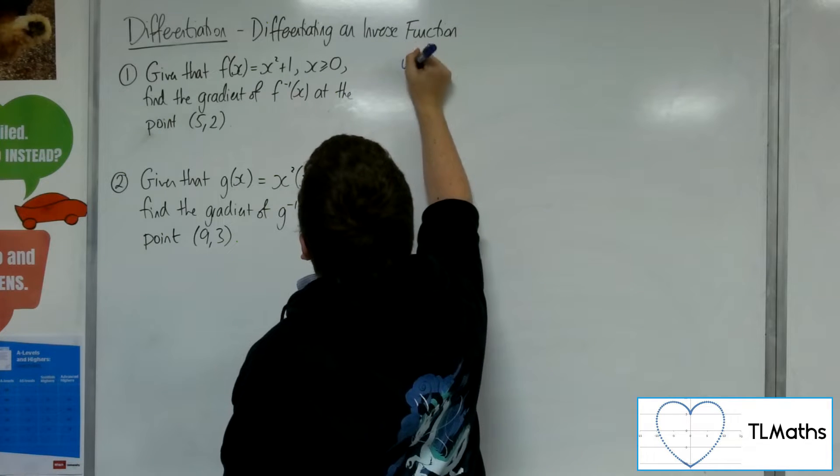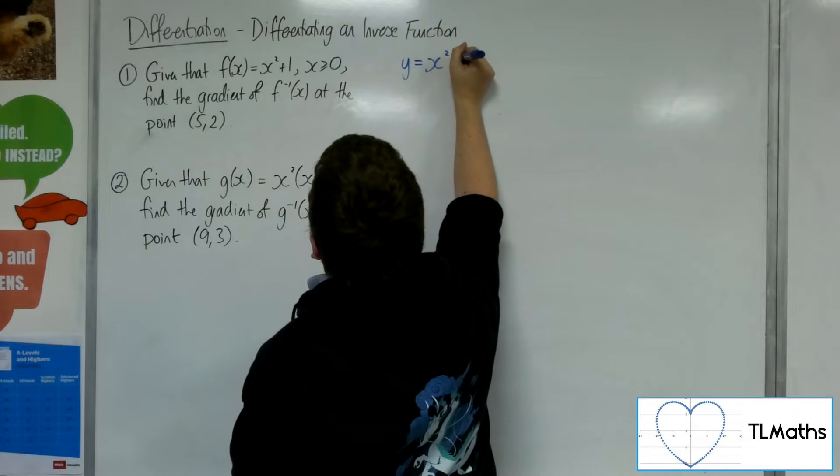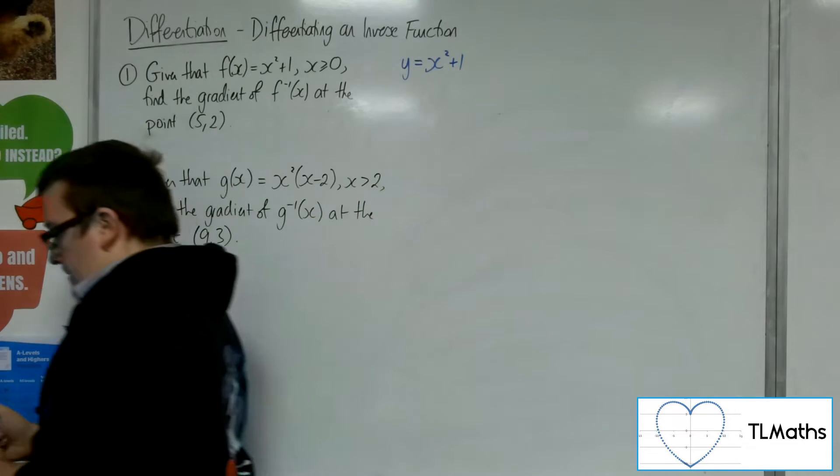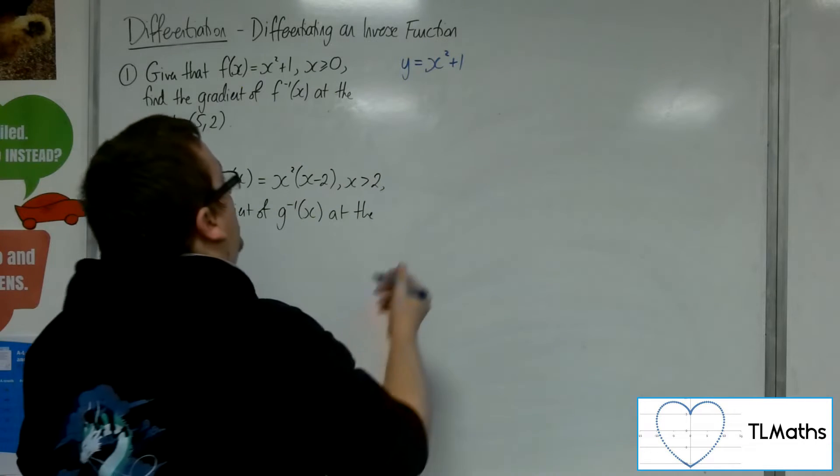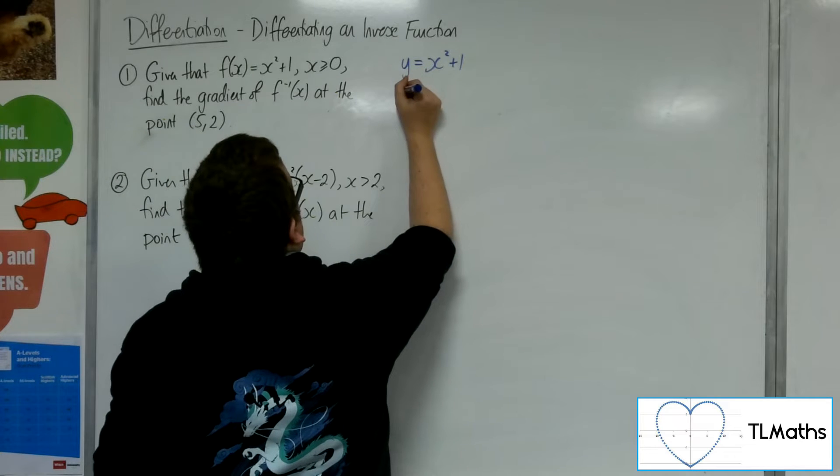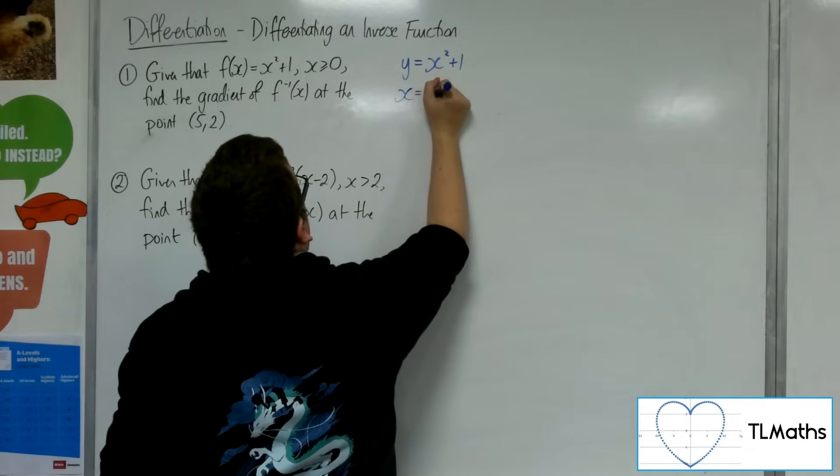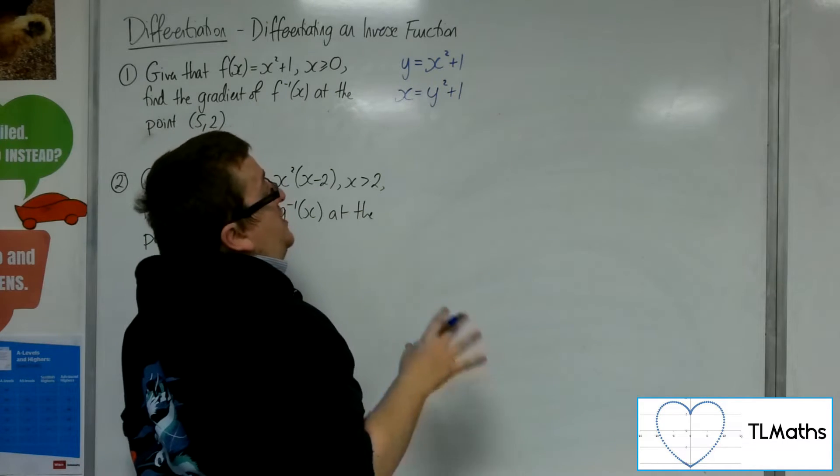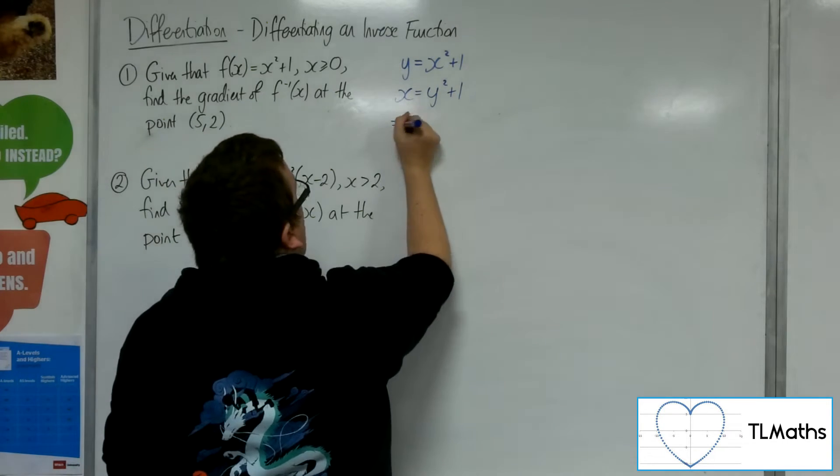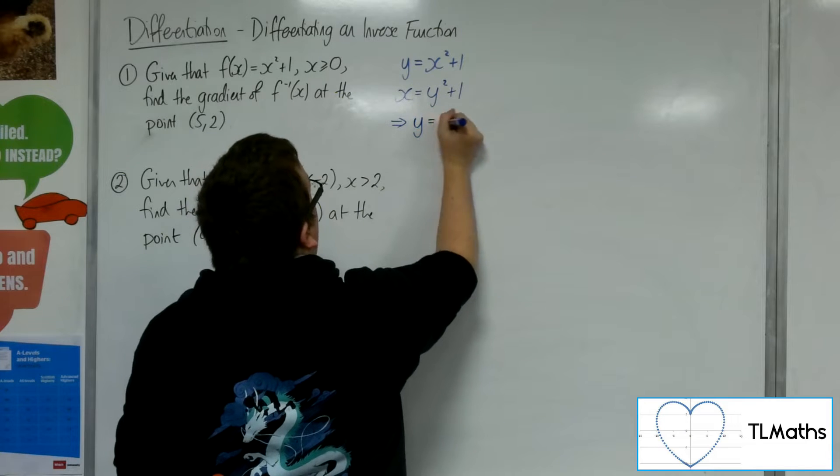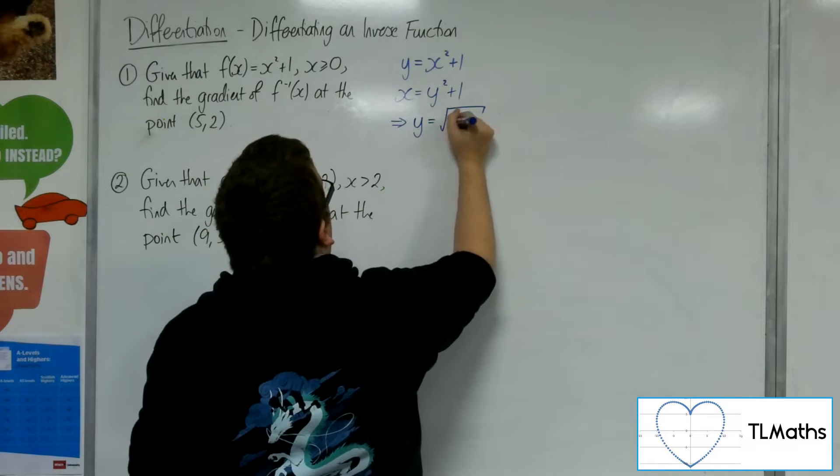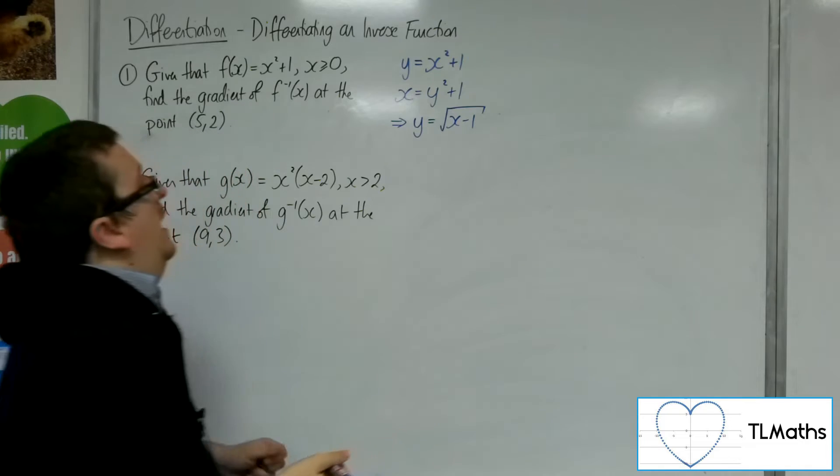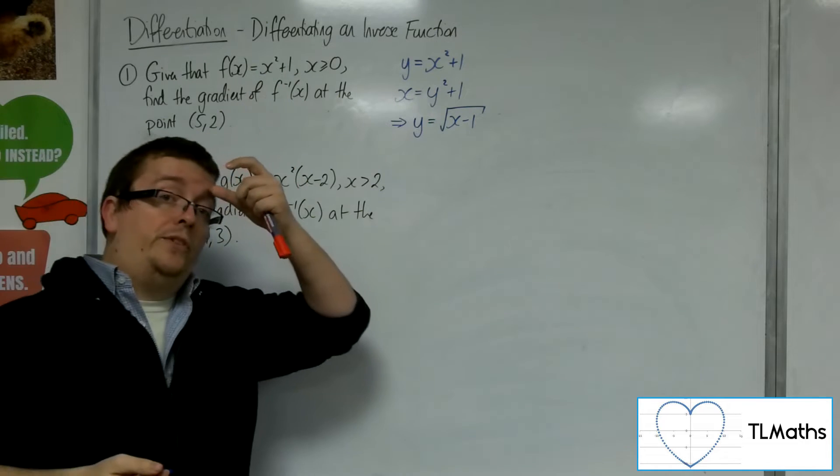Now, first of all, we'd write y is equal to x squared plus 1. And then you swap the x's and y's. Then I want to rearrange this to get y equals, so subtract 1 from both sides and then square root. And it'll be the positive square root of x minus 1 because x is greater than or equal to 0 here.